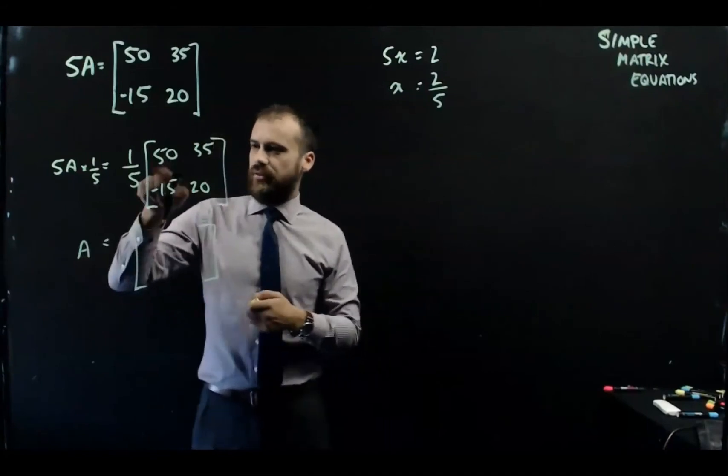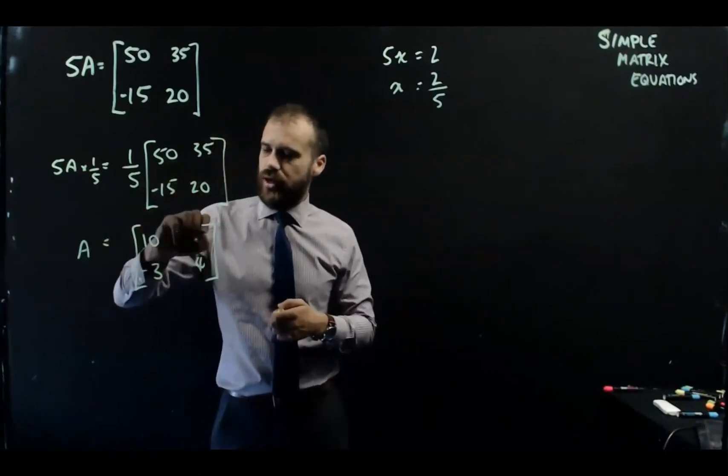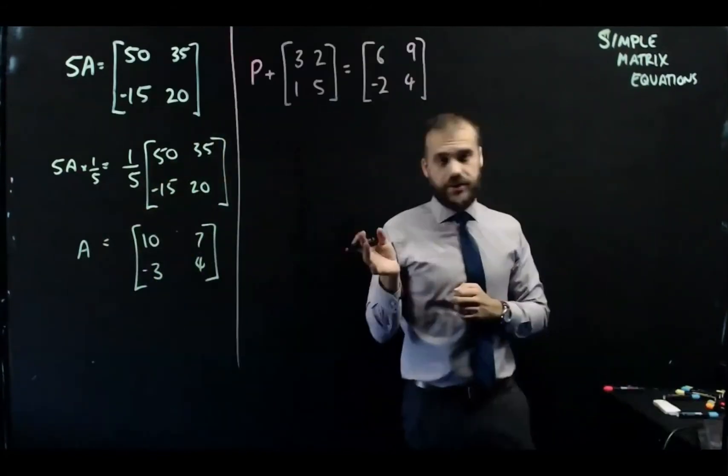So 1/5 times 50 is 10, negative 3, 7, 4. And there's our matrix.